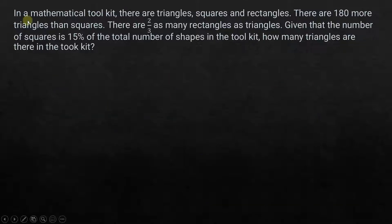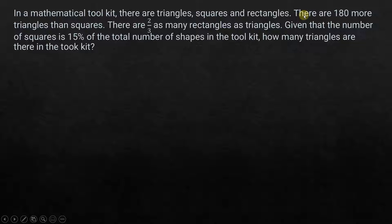The question: in a mathematical toolkit there are triangles, squares, and rectangles. There are 180 more triangles than squares. There are two-thirds as many rectangles as triangles. Given that the number of squares is 15% of the total, how many triangles are there? The base for the first comparison is squares.